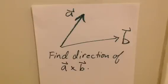We're going to do a couple more examples of finding the vector cross product. Suppose that I give you these two vectors, A and B,